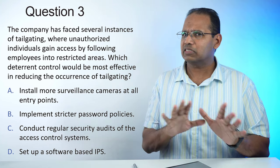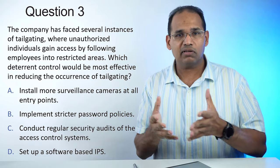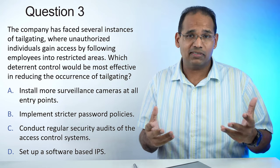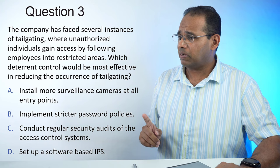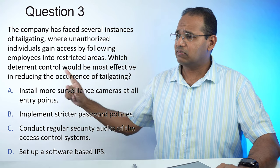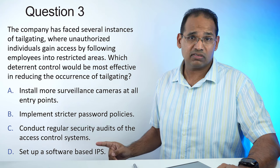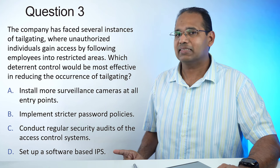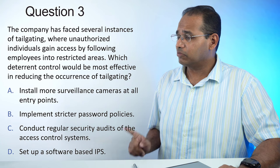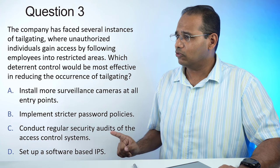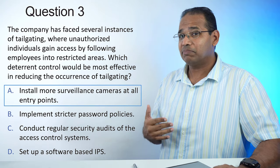Notice the question is about deterrents. Deterrent controls are things that we implement to scare people off from doing the bad or illegal activity. Install more surveillance cameras at all entry points is good. Implement stricter password policies won't help here because it's a physical problem. Set up a software-based IPS is a technical control and won't address this physical problem. The best answer is A — surveillance cameras — because if you're a bad person and you notice you're on camera, it may scare you off.